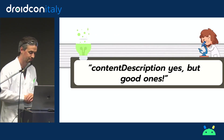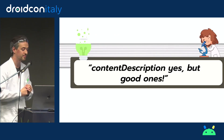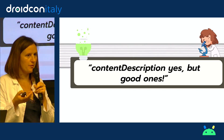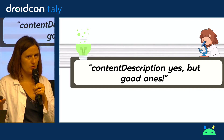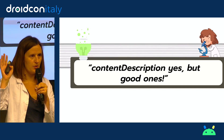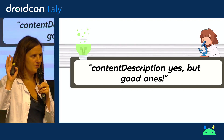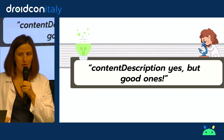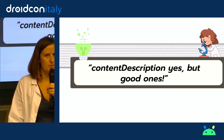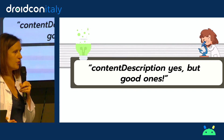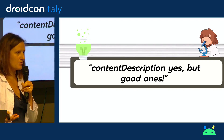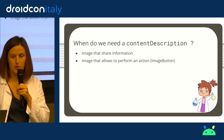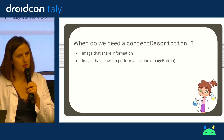Let's start with the product image and icon button. The most popular accessibility concept you probably know is content description. Raise your hand if you know content description. But how do you write a good content description? Here, 'product image' is technically correct, but it doesn't help the user.